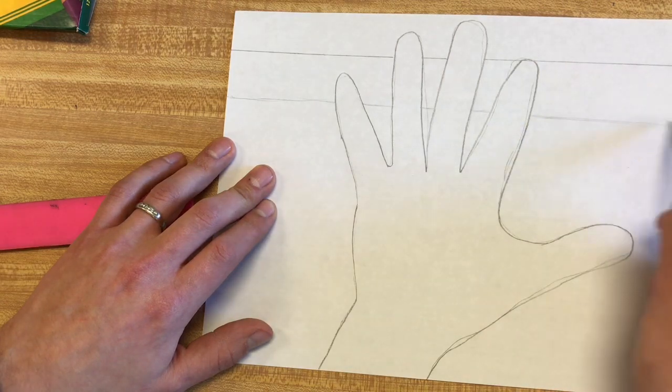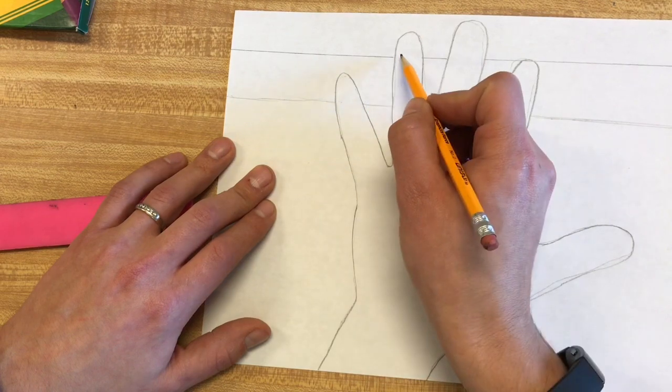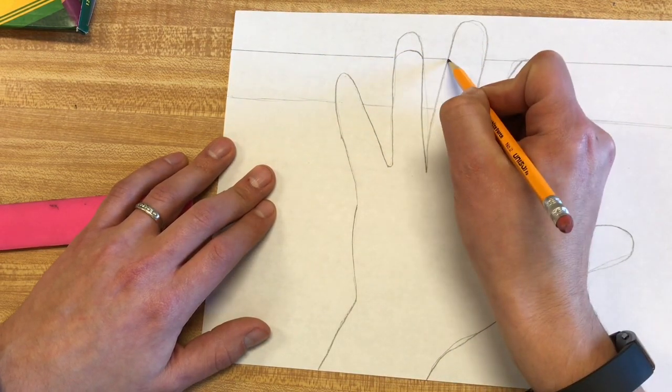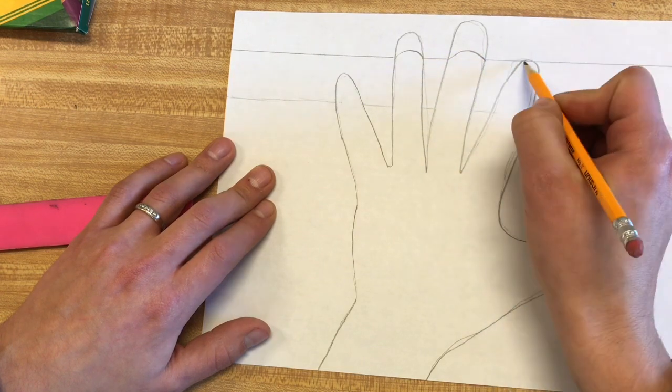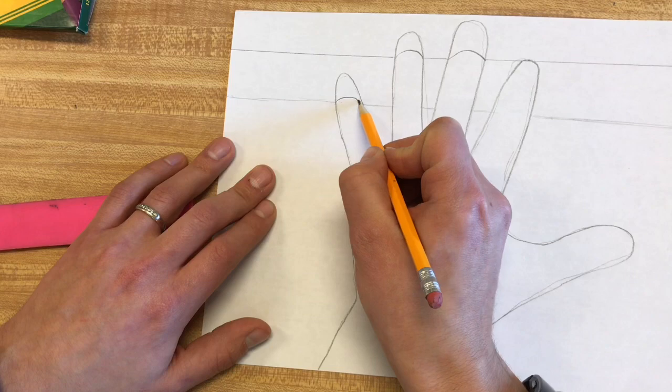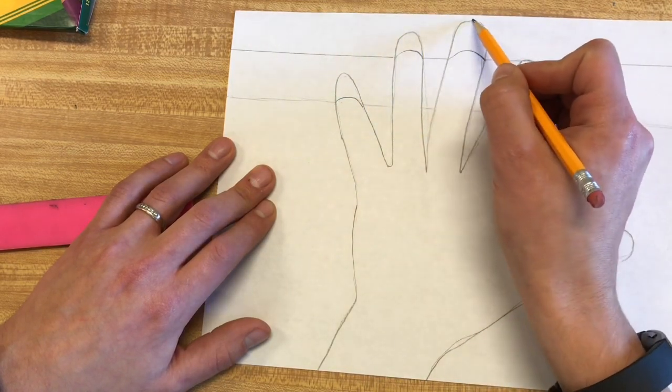That's the straight line. And then once you hit these fingers you want to do a curved line, a curved line, and then this one already curves so this one would curve.